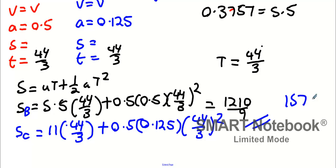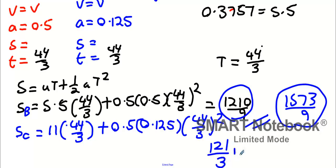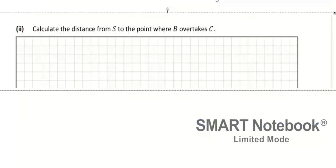We've got 1573 over 9 for the distance of the car. We're expecting the distance of the car to be bigger than the distance of the bike. Now we're going to take them away from each other and we're getting 121 over 3, which is the correct answer. Take the distance of the bike away from the distance of the car and you get 121 over 3 meters.